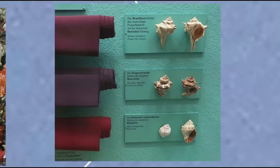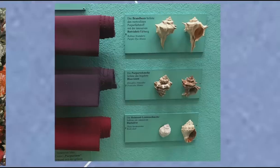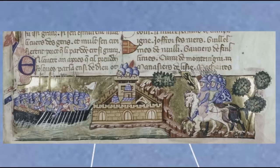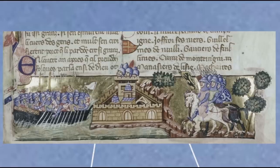Tyrian purple was highly valued in the ancient world, becoming associated with royalty. During the Middle Ages it became unavailable due to the near extinction of the snail and the sack of Constantinople in 1204, so medieval dyers turned to various red dyes such as Kermes, which could be used along with indigo to produce a sort of purple.